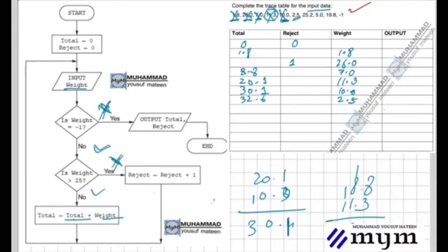The next value is 25.2. It's not minus one. Is it greater than 25? Yes, it is greater. So this condition runs: reject equals reject plus one. The previous reject value was one, plus one makes it two.